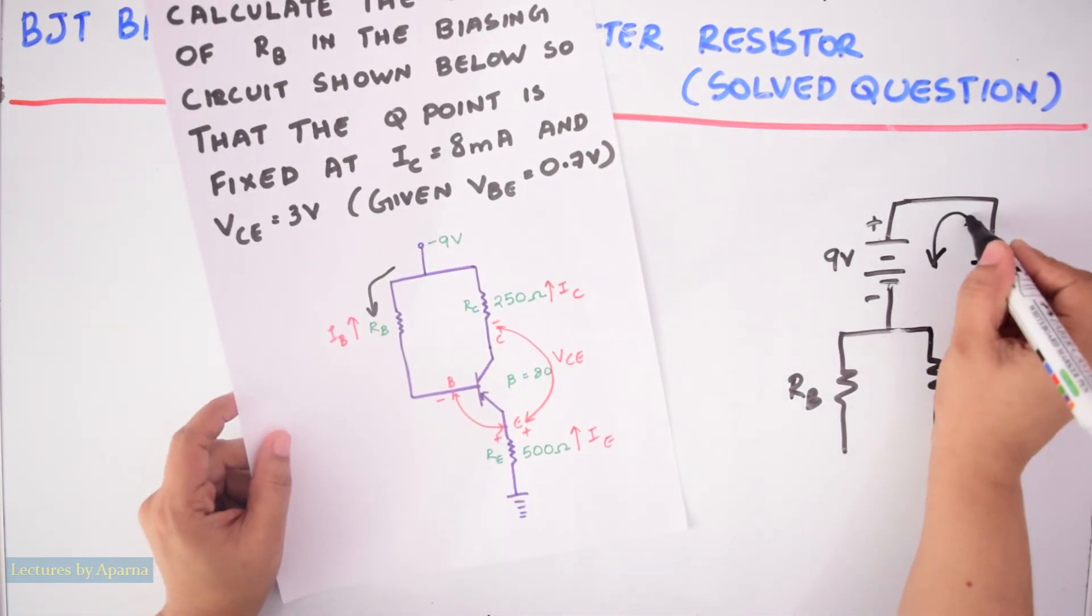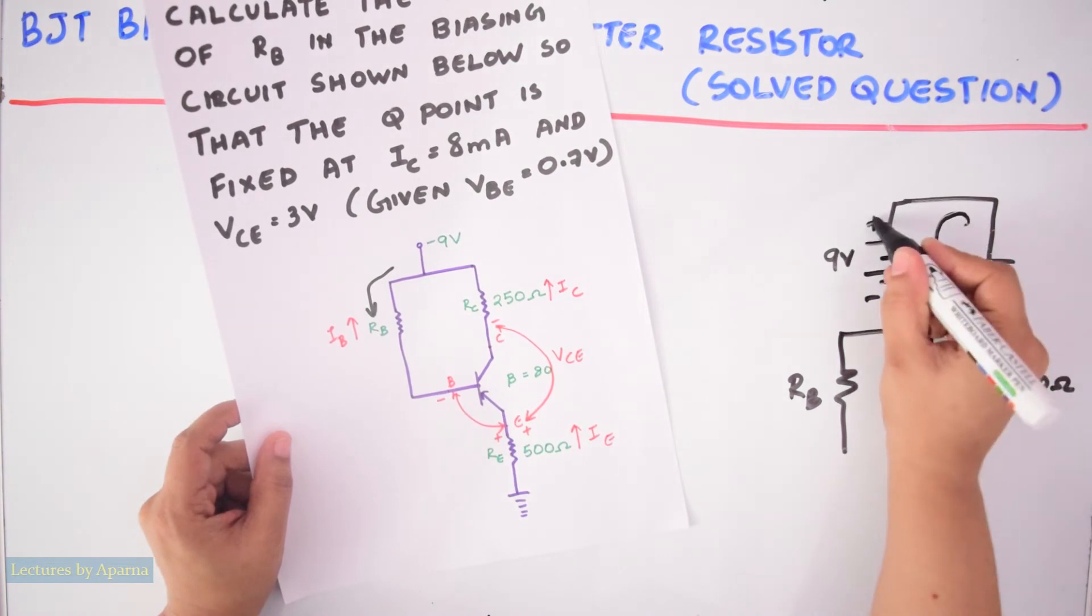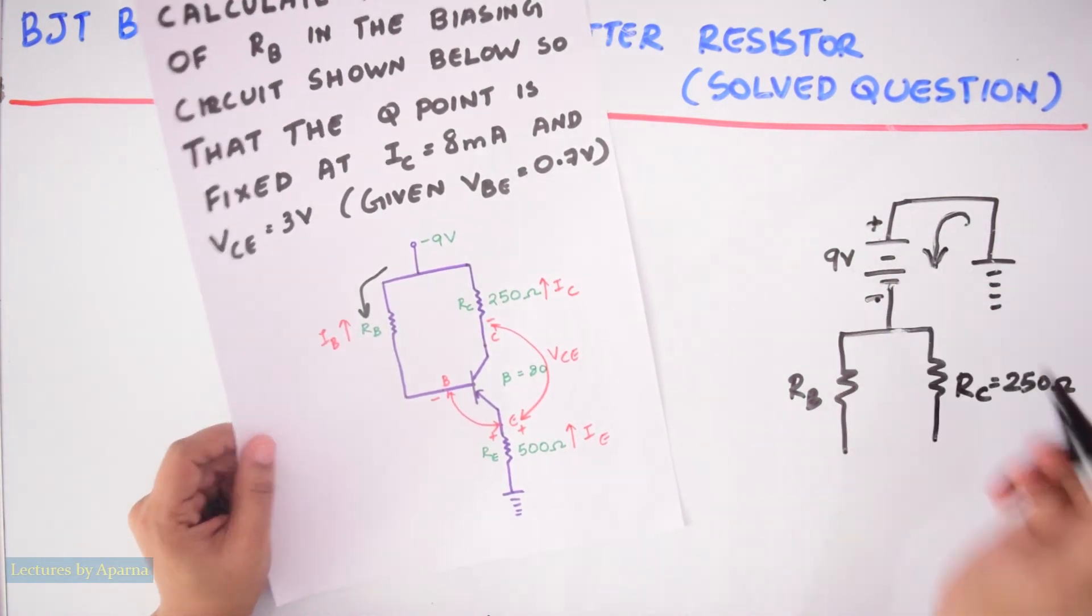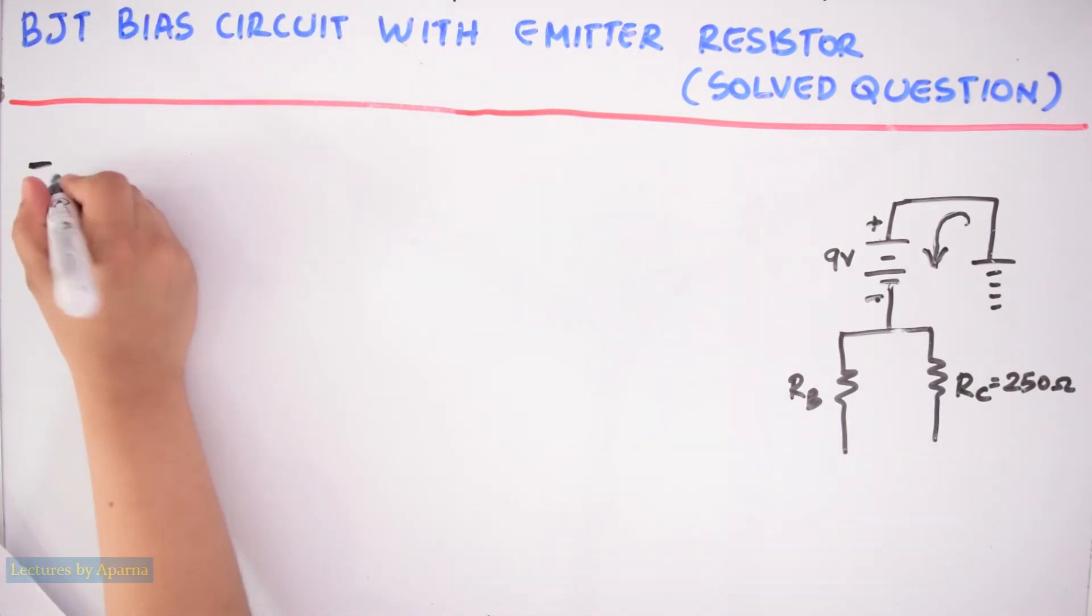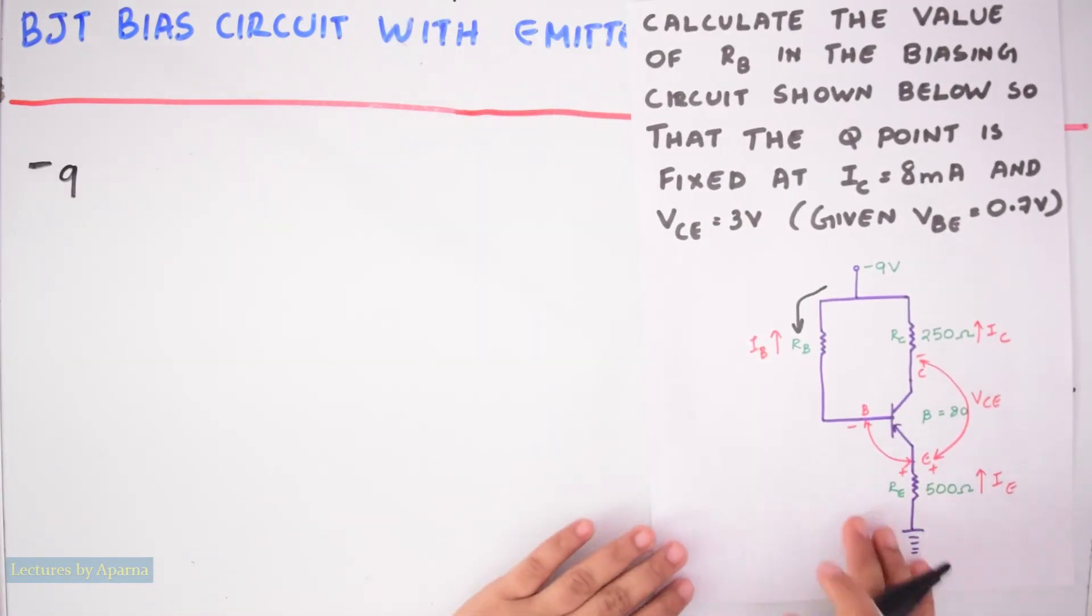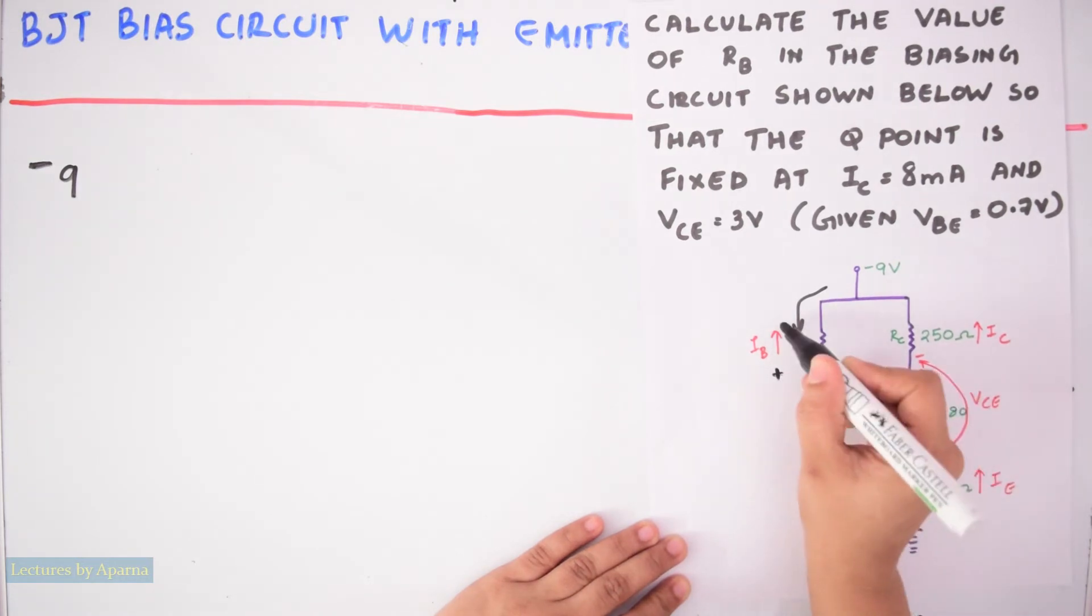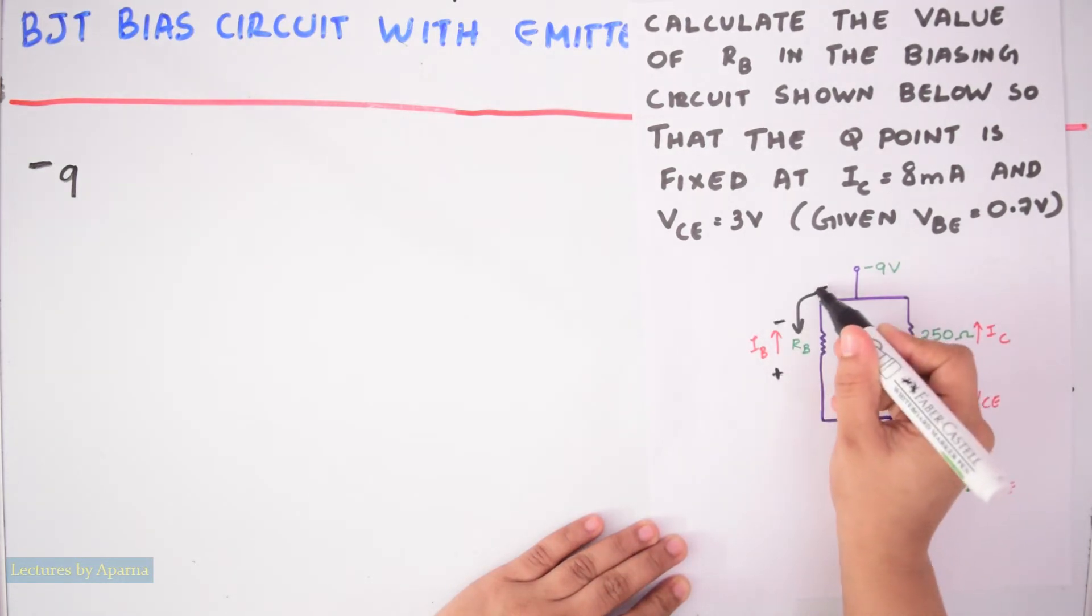So when we go in this direction and go to the input side it will be like this. We are starting from here. So here there is a decrease in potential because we are going from plus to minus. So it will be minus, minus 9 volt. And then when we go to the input side the current is actually flowing from a higher potential to a lower potential. So when we go in this direction we are getting an increase in potential because we are going from a minus to plus.